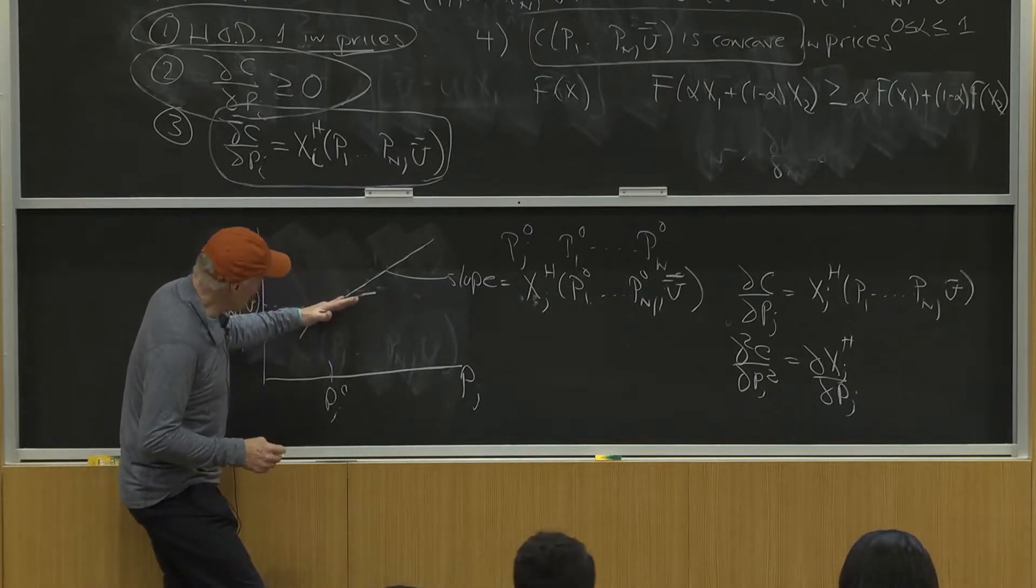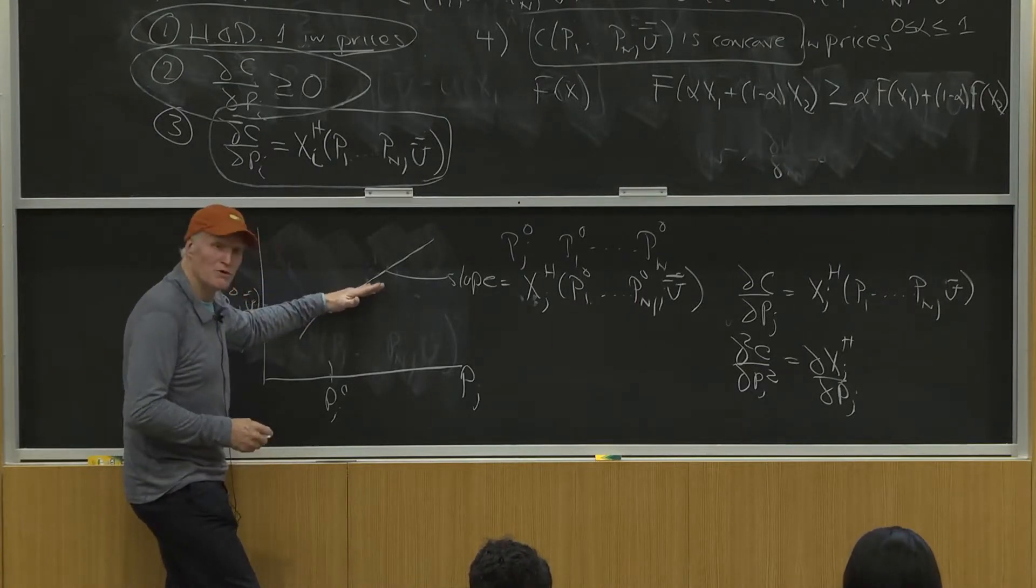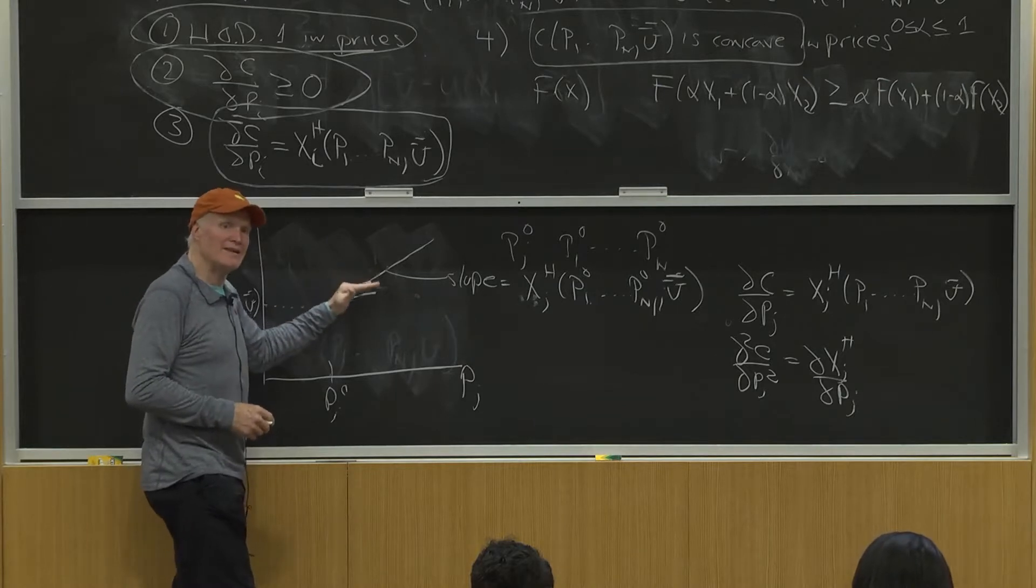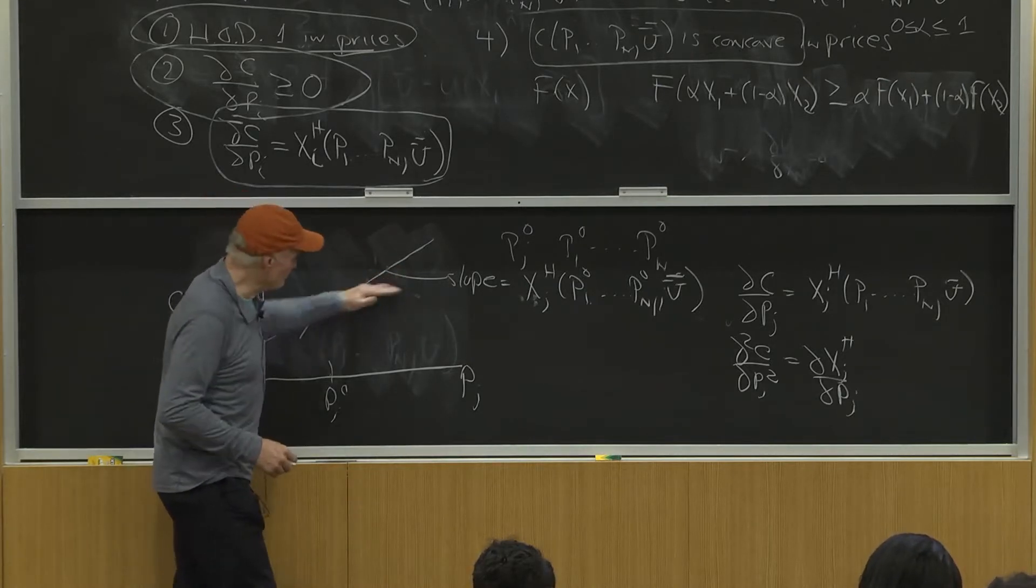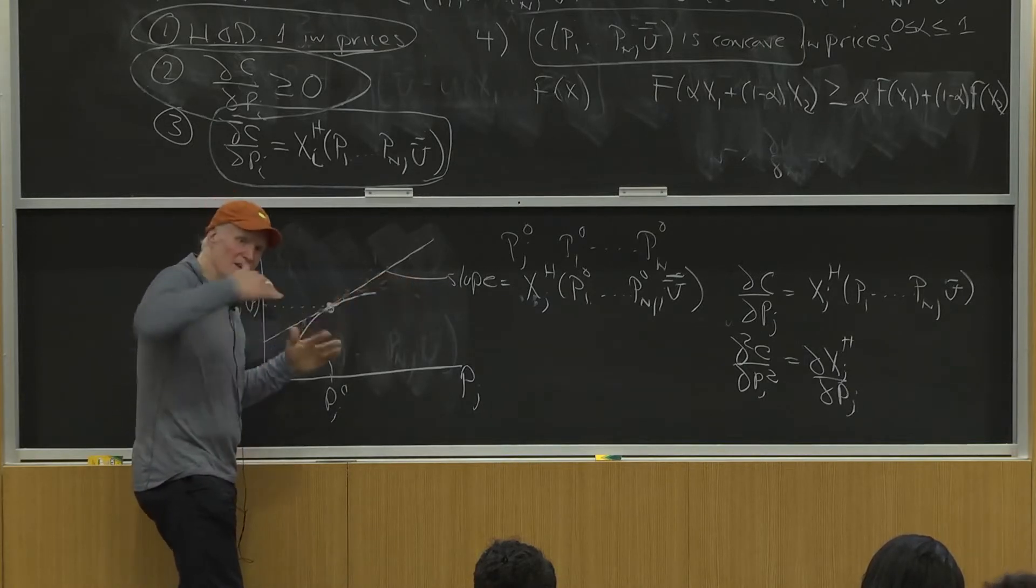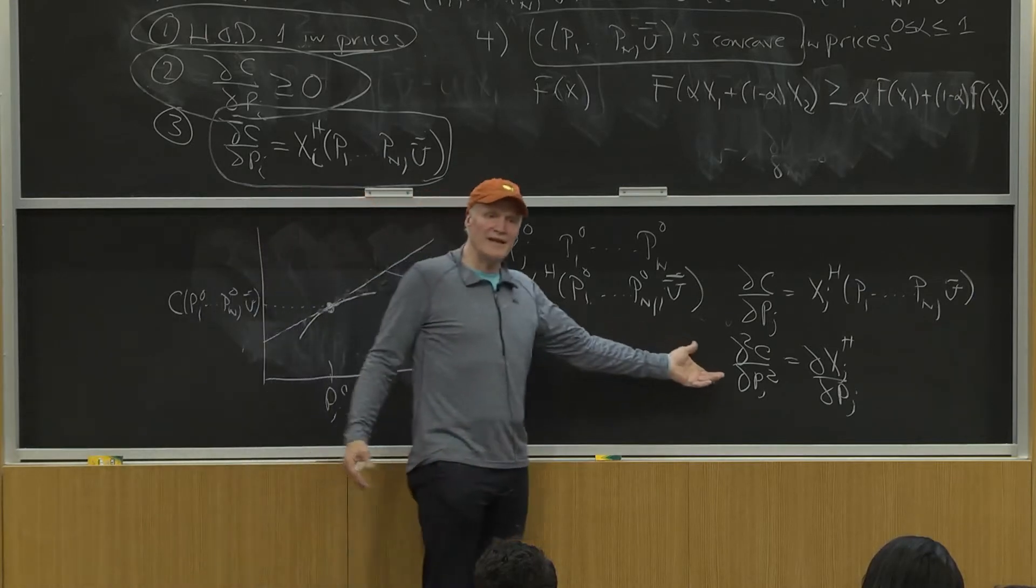At this point, the slope is 10. Why? Because I'm buying 10. At this point, the slope is only 8. Why? Well, the only way that slope can now be 8 is that I'm now buying 8. And the only way that slope can get down to 6 is I'm now buying 6. So this thing can only be as concave as this quantity is responding.